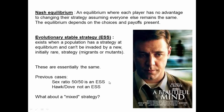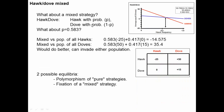Usually Nash equilibrium and ESS are the same, but under some circumstances they are not. What about a mixed strategy? When thinking about hawk-dove, we assumed individuals either are hawks or doves, and sex ratio individuals are either males or females. But what about cases where strategies can be mixed? Going back to the hawk-dove example, the equilibrium frequency was 58.3% hawks and 41.7% doves, where being a hawk is just as fit as being a dove.